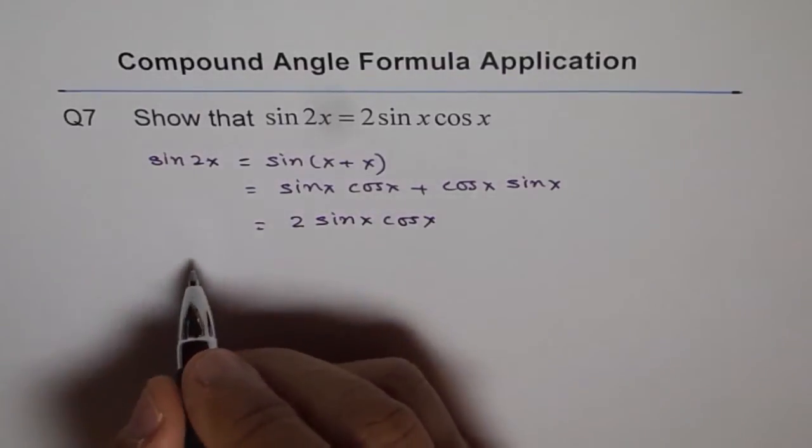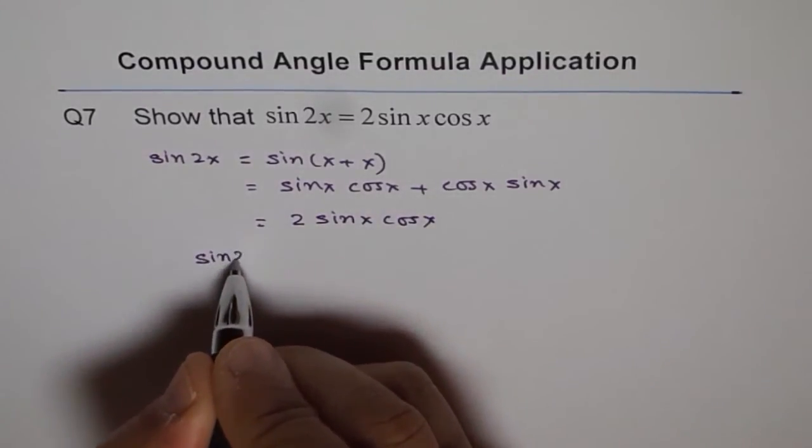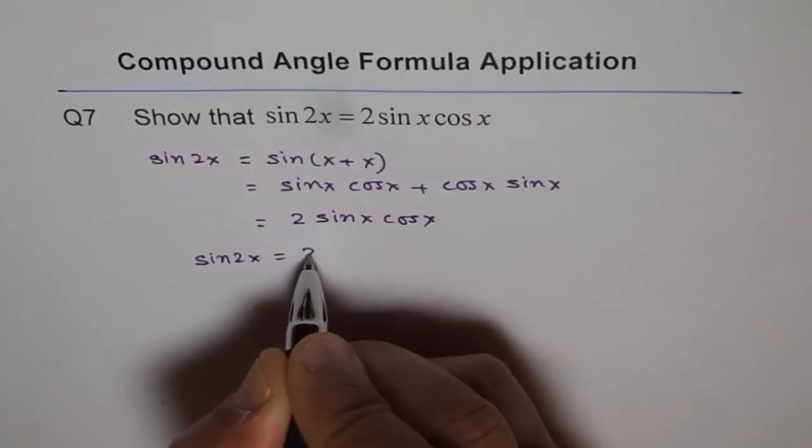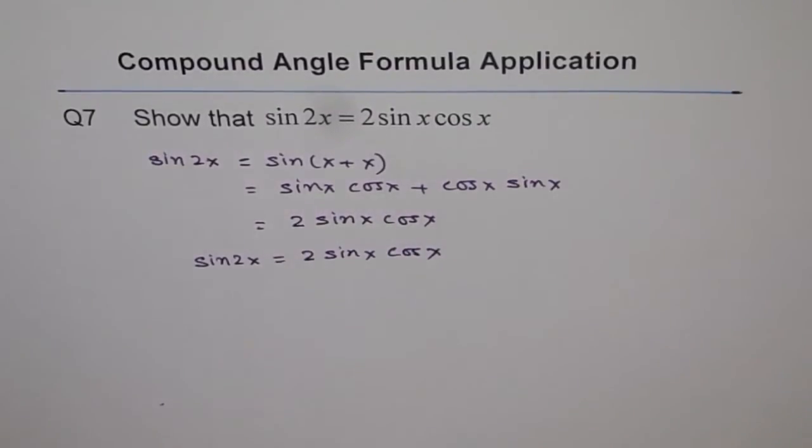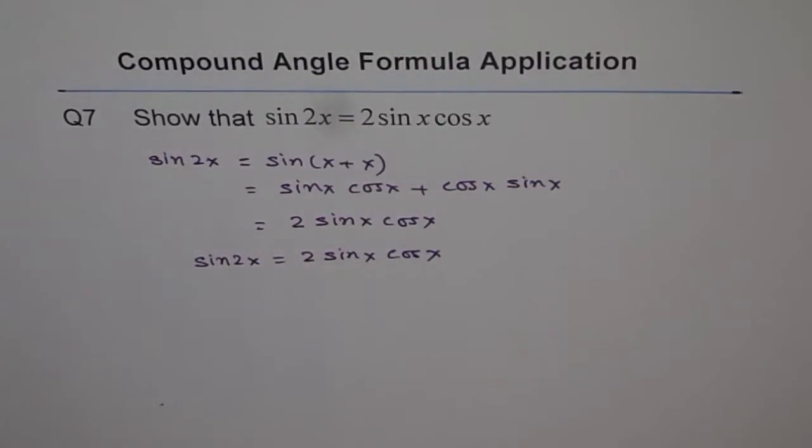So sin 2x is equal to 2 sin x cos x, correct? So that's a double angle formula and we always use in our identities and in equations.